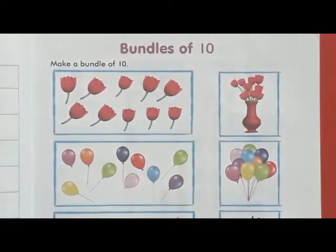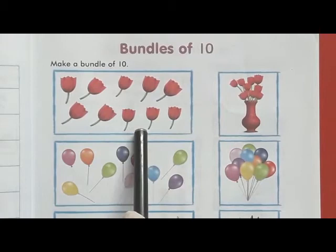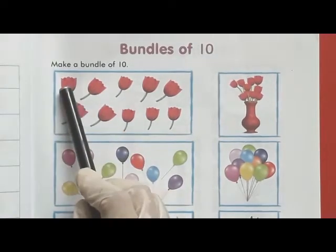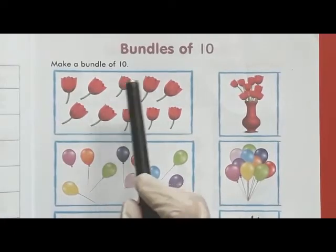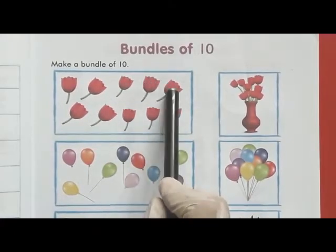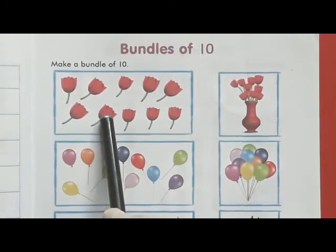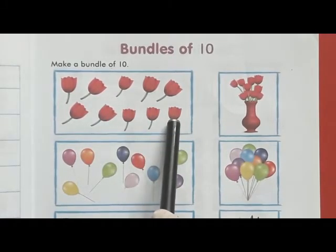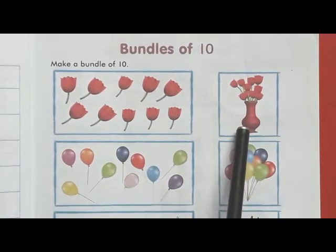10. Dear kids, look, how many flowers are over here? Let's count with me. 1, 2, 3, 4, 5, 6, 7, 8, 9, 10. Yes, 10 flowers make a bundle of 10.